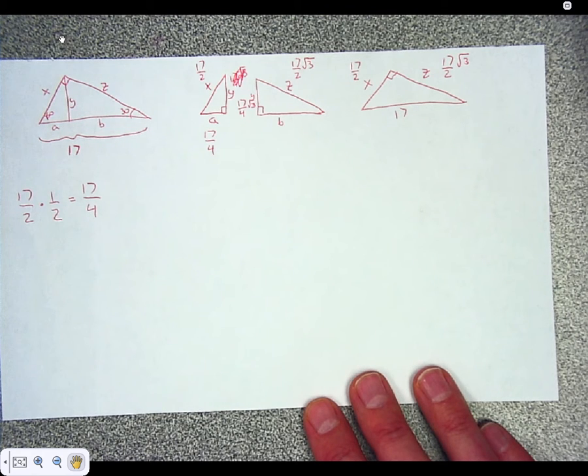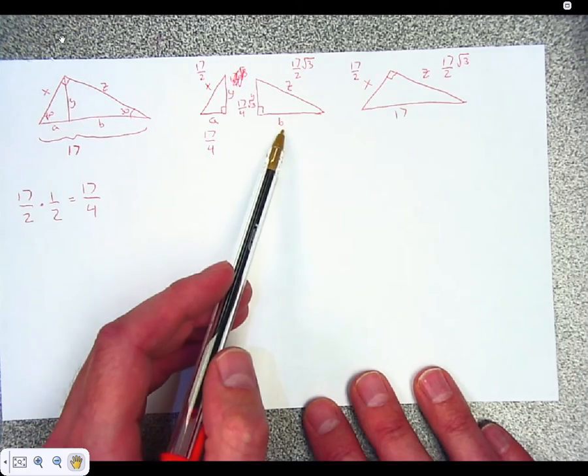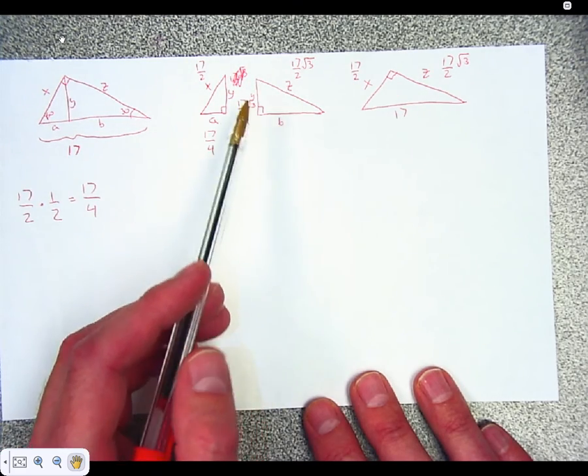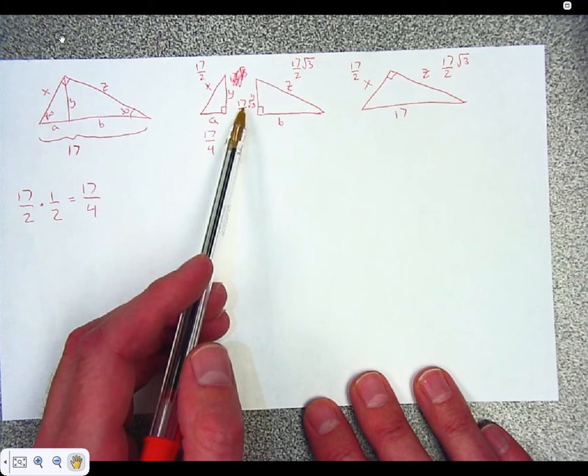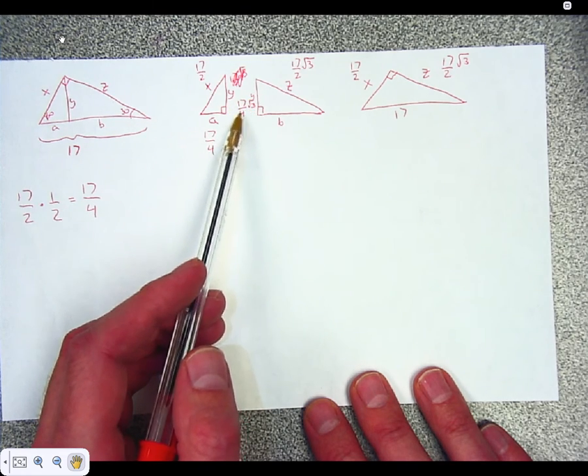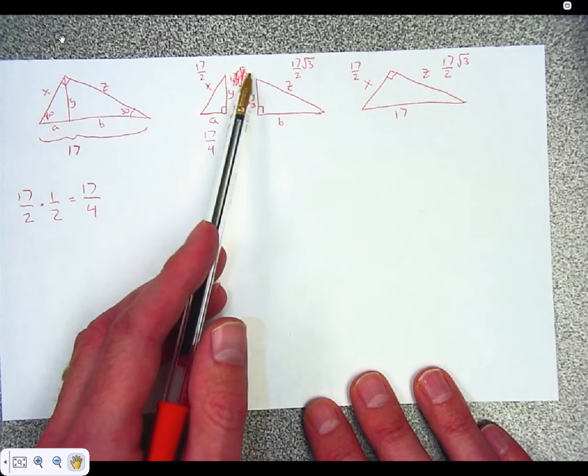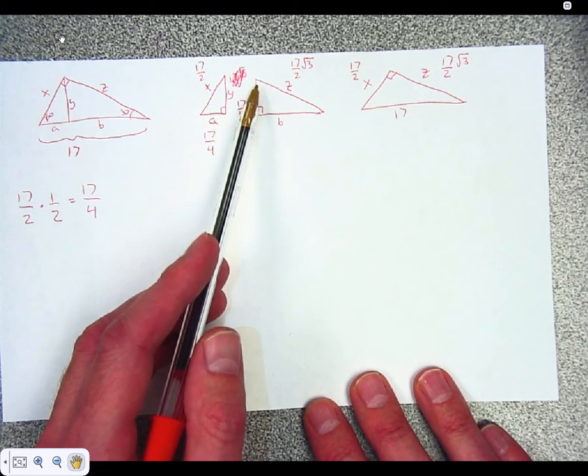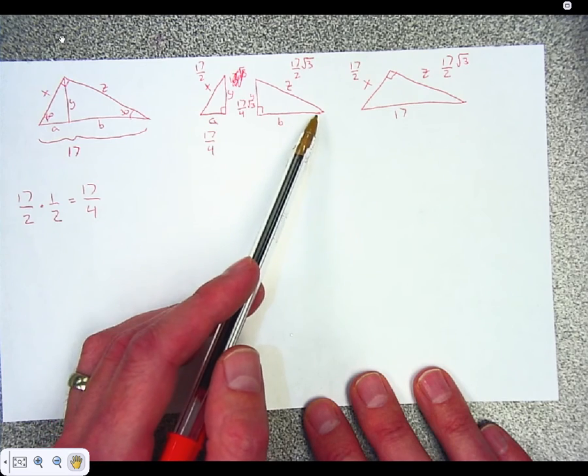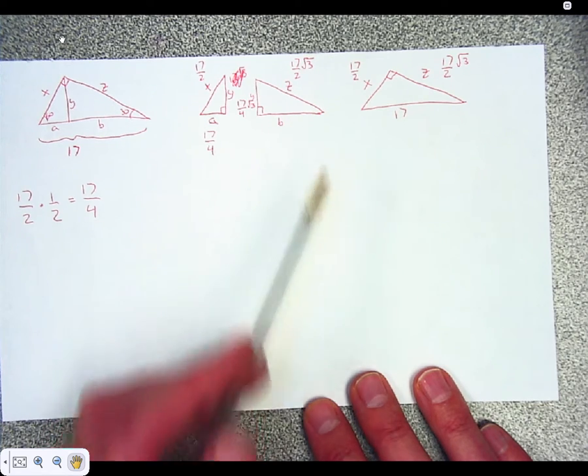All right, we are really close to being done. We could, all of them missing is this one here, as the long leg. We could take the short leg times the root 3 to get the long leg, because Y is the short leg on this right triangle here. And we could do that and that would be fine. You can do it that way. There is another way.